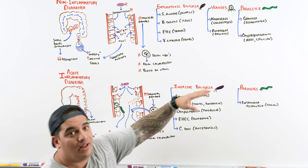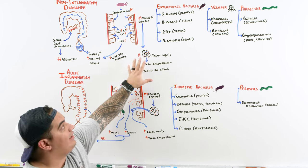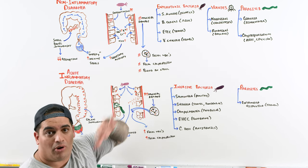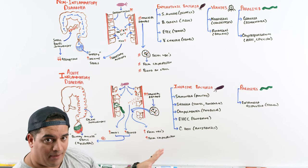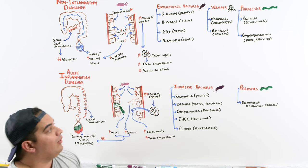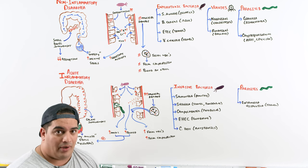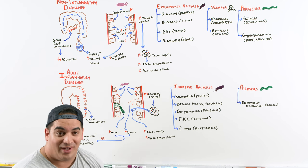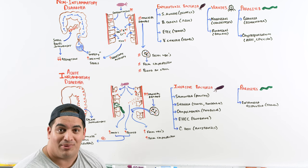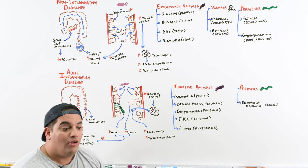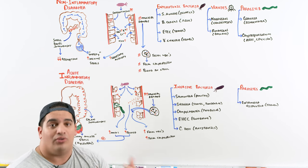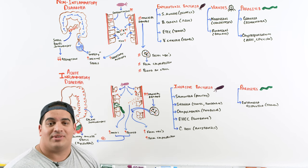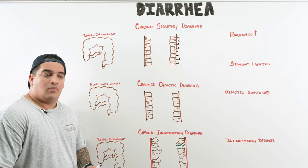To summarize: acute non-inflammatory diarrhea has high-volume watery stools affecting the small bowel with no inflammatory markers. Acute inflammatory diarrhea has bloody mucoid stools from colon involvement with positive fecal WBCs, calprotectin, and blood. Now let's move on to chronic diarrhea — more than three loose stools per day for greater than two weeks.